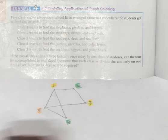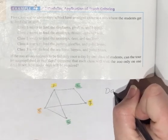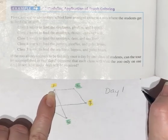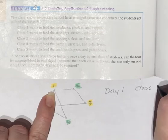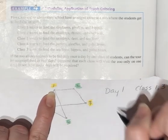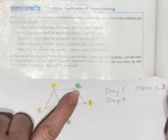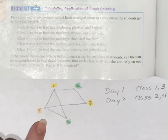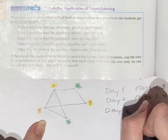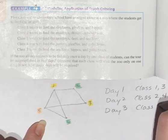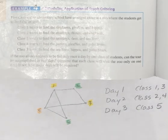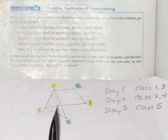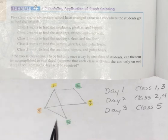So now we have to write their schedule. So on day one, I would have class one and three. On day two, I would have class two and four. And then on day three, I would have class number five. And this is not the only answer. This is one possible answer. Because I could have colored this a little bit different.